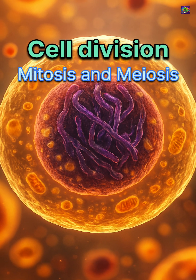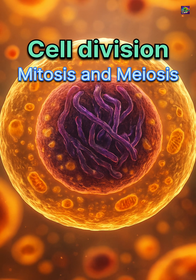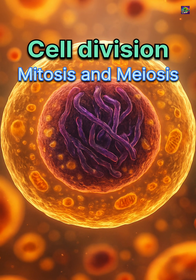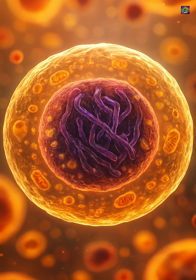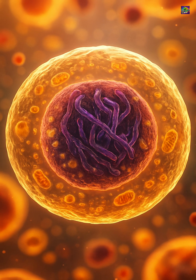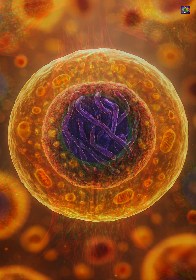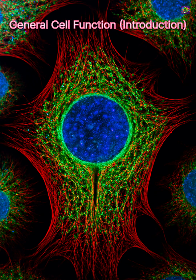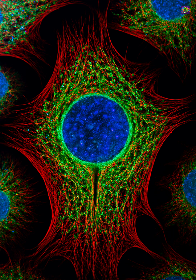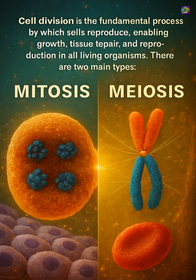Cell division is the fundamental process by which cells reproduce, enabling growth, tissue repair, and reproduction in all living organisms. There are two main types: mitosis and meiosis.